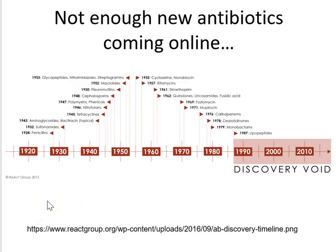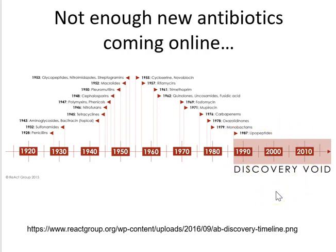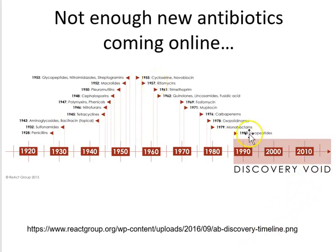Unfortunately, we don't have enough new antibiotics coming online. The last time we had a truly new category of antibiotics it was the lipopeptides, back in the 1980s. Since then, we've had what's considered a drug discovery void in this research space. Most of the antibiotics we rely on today are those classes of antibiotics whose names and years of first clinical use are given here — ones we've had for decades, or perhaps very slight modifications of those previous ones.